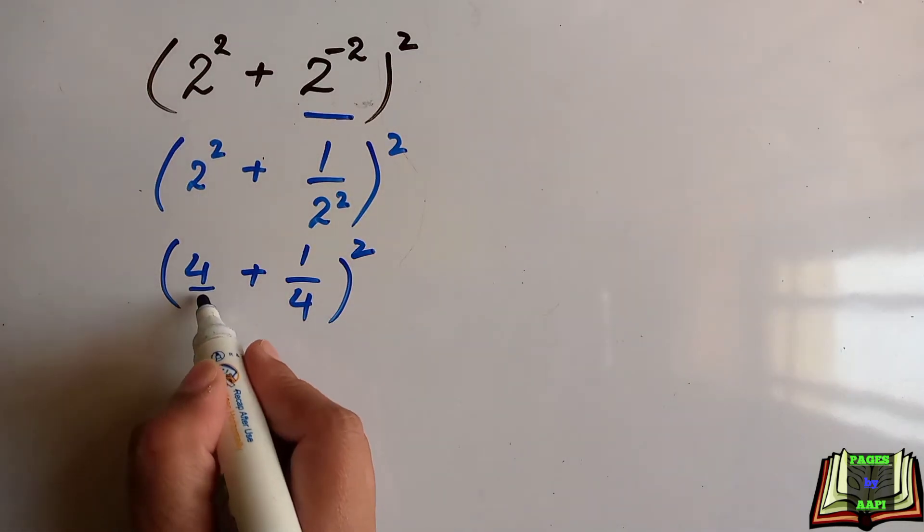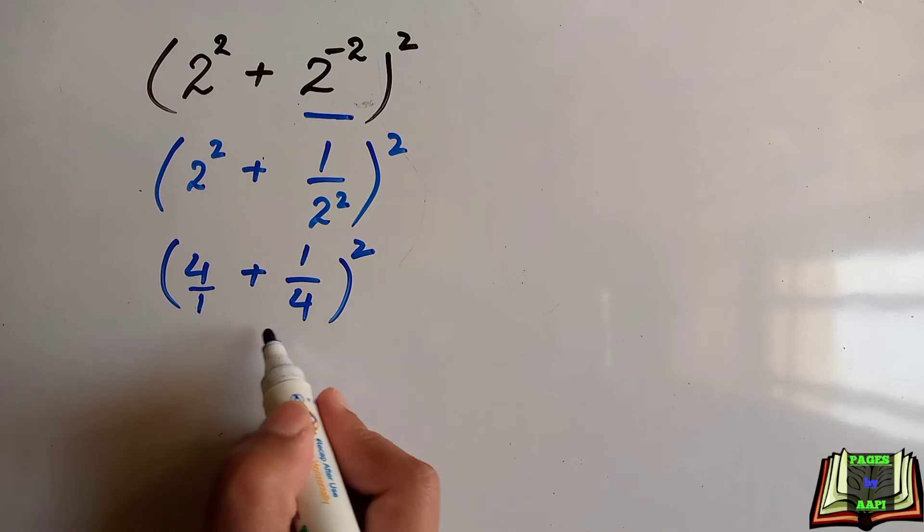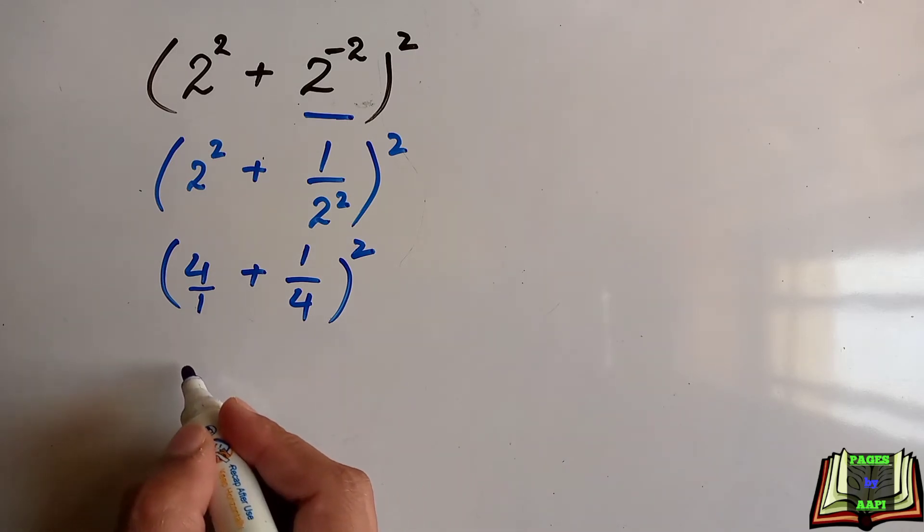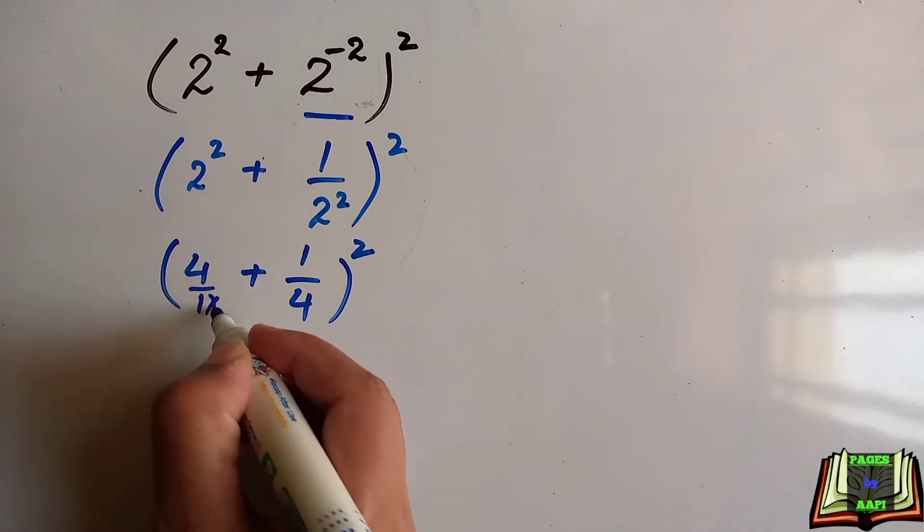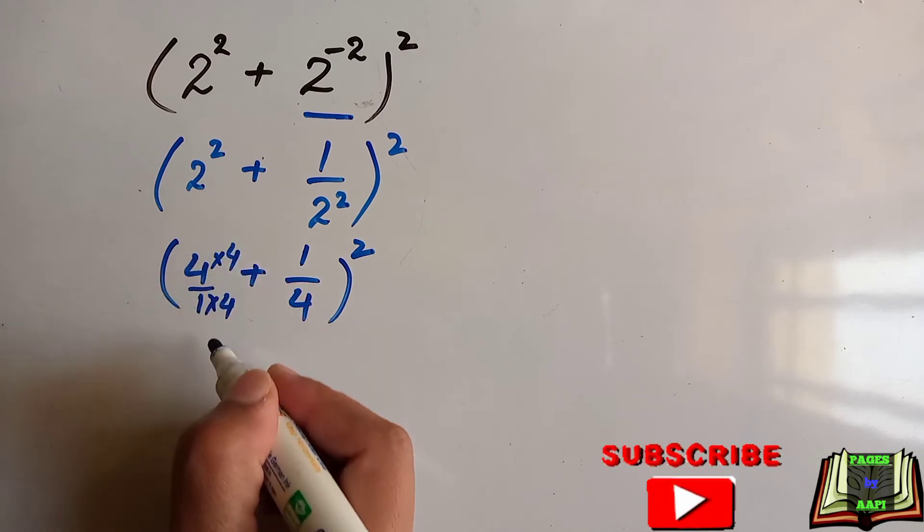This is basically 4 over 1, and we need the same denominator. For that, we multiply and divide this fraction by 4. After multiplying, 4 times 4 is 16 over 4, plus 1 over 4, whole square.